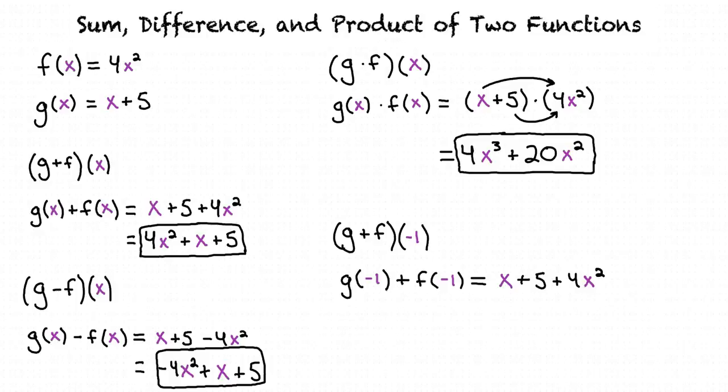This once again equals x plus 5 plus 4x squared, but instead of our input being x, this time our input is negative 1. So now we insert our input value of negative 1 wherever there is an x in the function. After simplifying, we see that our final answer is 8.